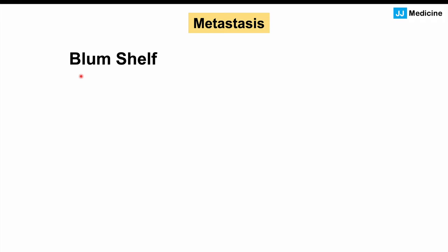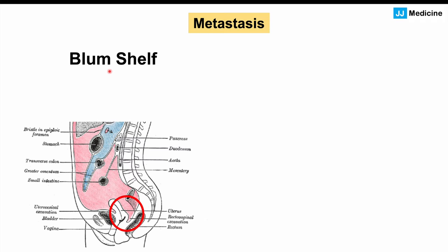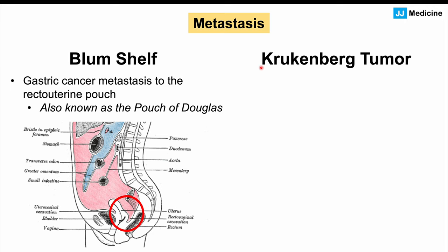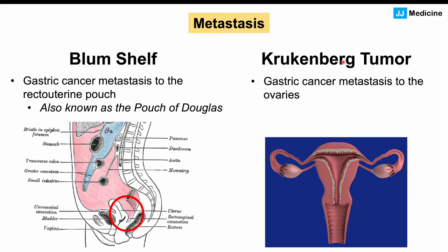Other locations where gastric cancer can metastasize include the Blumer's shelf, which is metastasis to the recto-uterine pouch — also known as the pouch of Douglas — behind the uterus in females. We can also see Krukenberg tumor, where gastric cancer metastasizes to both ovaries bilaterally.